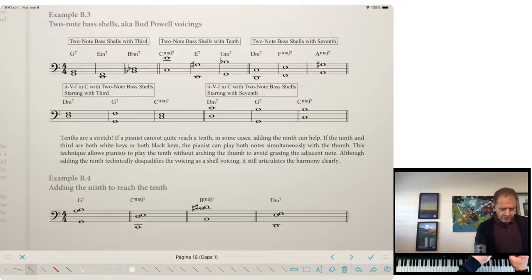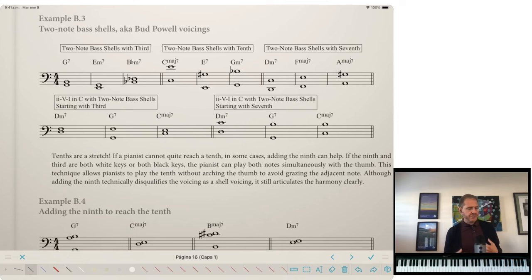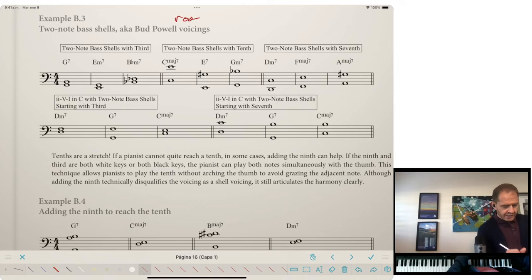So here's my best answer as to where you would start in terms of voicings. This is in the Roman numeral chapter B, Roman numeral 15 from Playing Solo Jazz Piano second edition. We're going to start here with example B3. So these are what I call two-note bass shells. And how this is going to work is that you're going to have the root of the chord plus the third or the seventh.